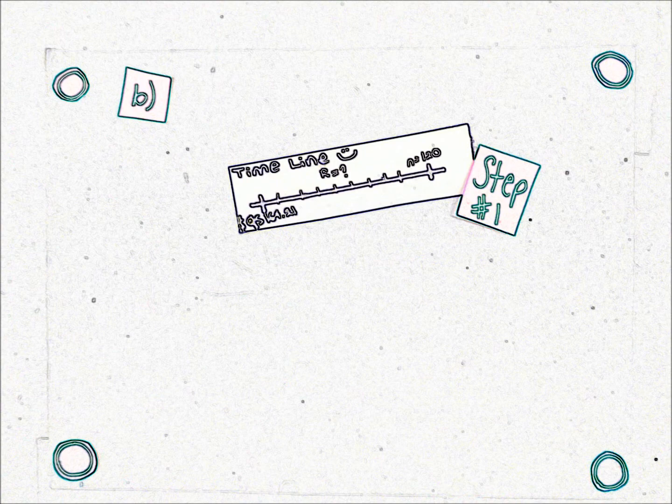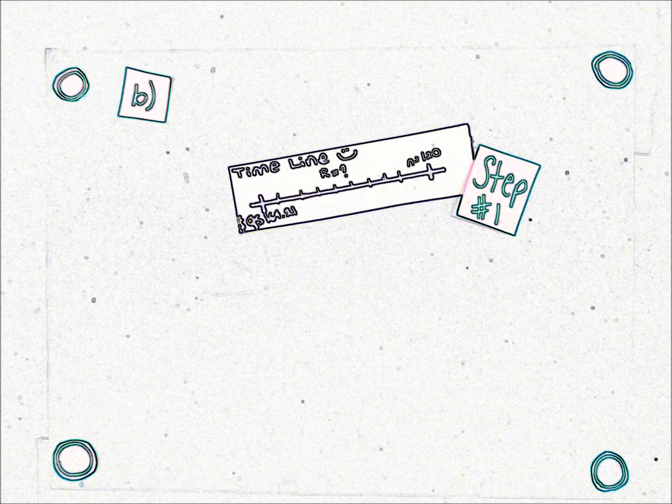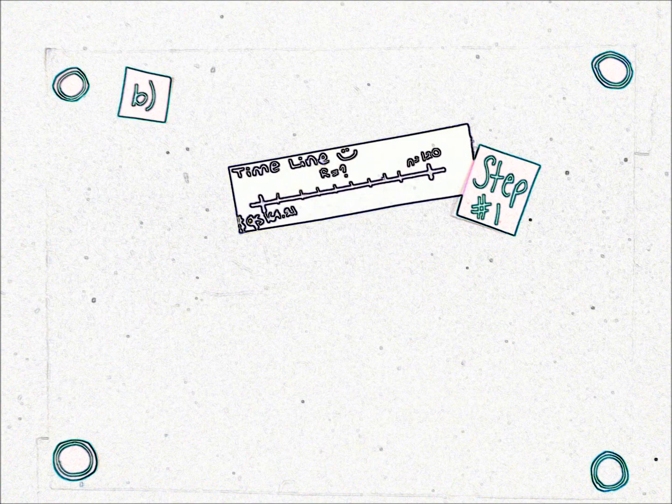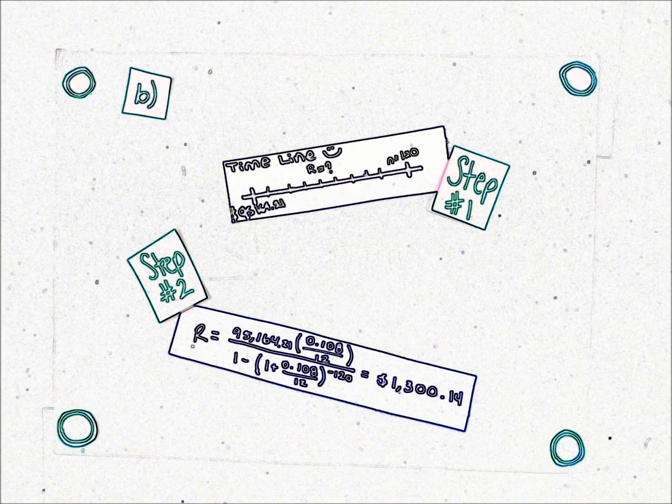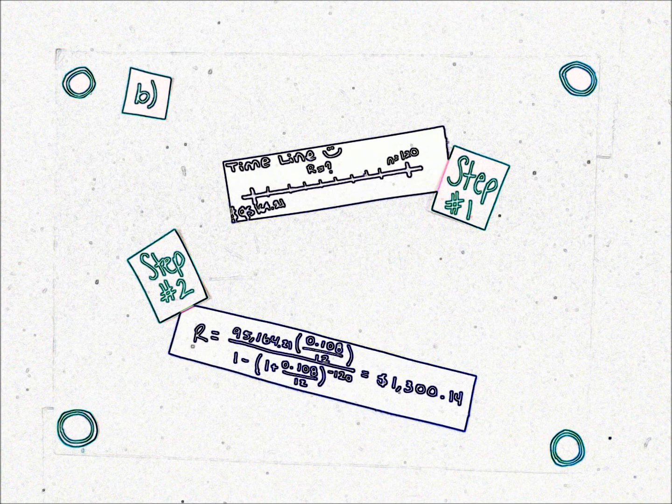Now we use this value as a present value to find the rent for the next 10 years. Those 10 years now translate as 120 periods, since we're still working with a monthly compounded interest. So we already know the present value, the number of periods, and we are looking for the exact same interest. So all we have to do is to substitute in the formula again and calculate the rents. And there it is. The answer for B is $1300.14.